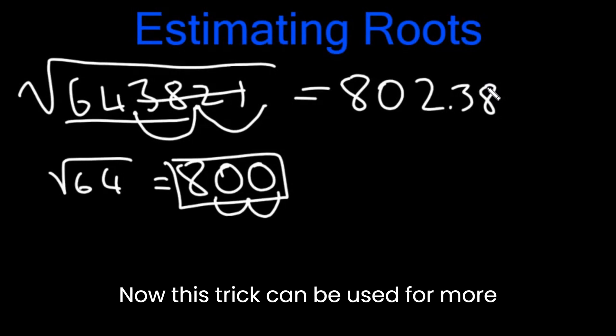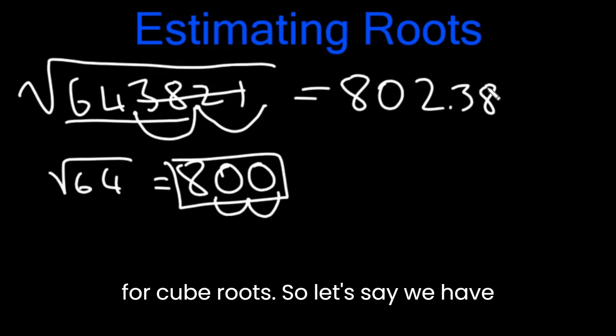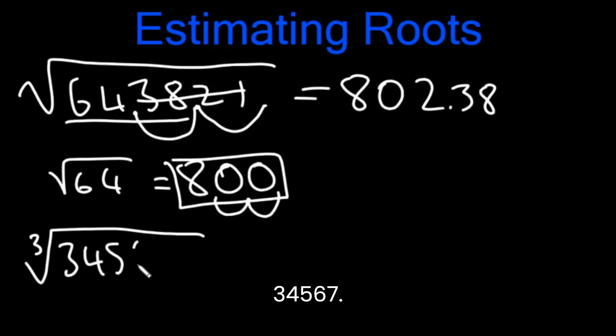The actual answer would have been 802.38 and a lot more digits. Now this trick can be used for more than just square roots. It can be used for cube roots. So let's say we have cube root of 345678. Let's just add one more number just for fun.